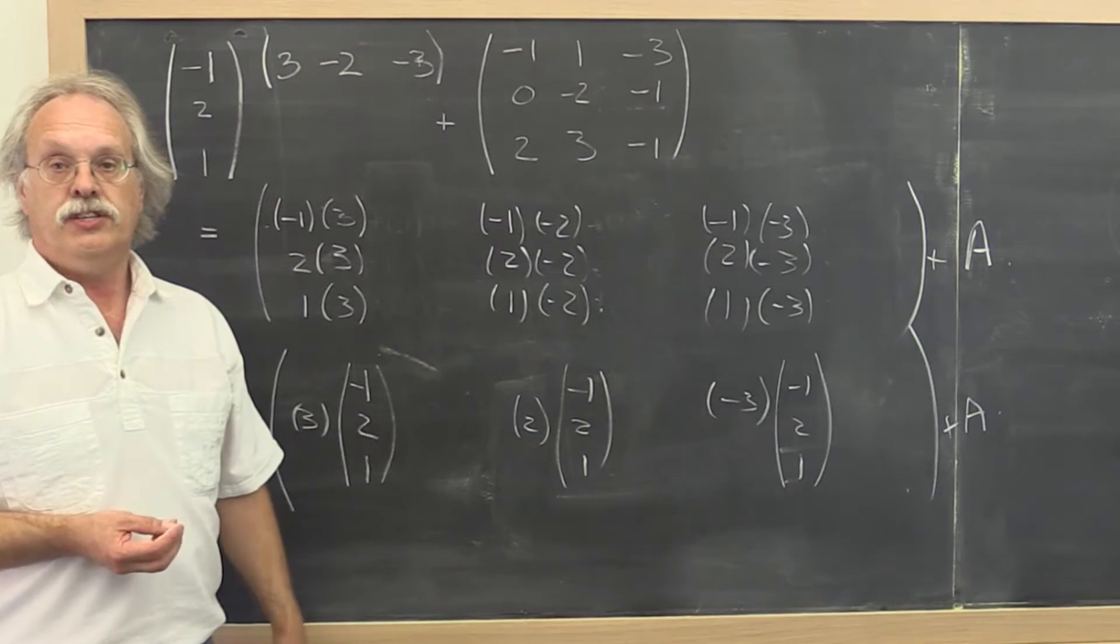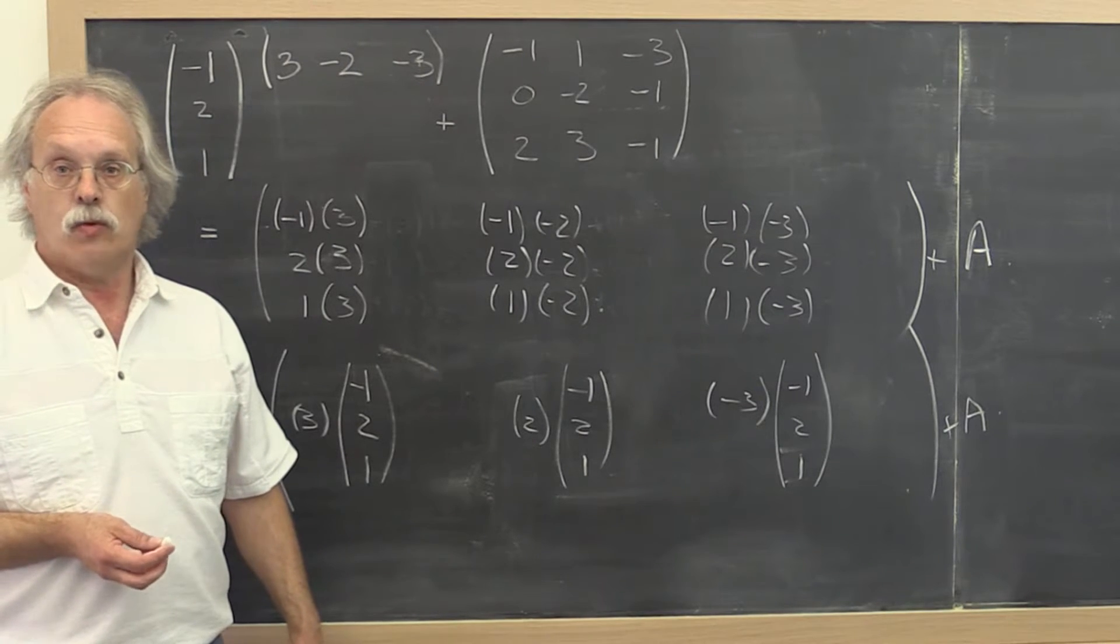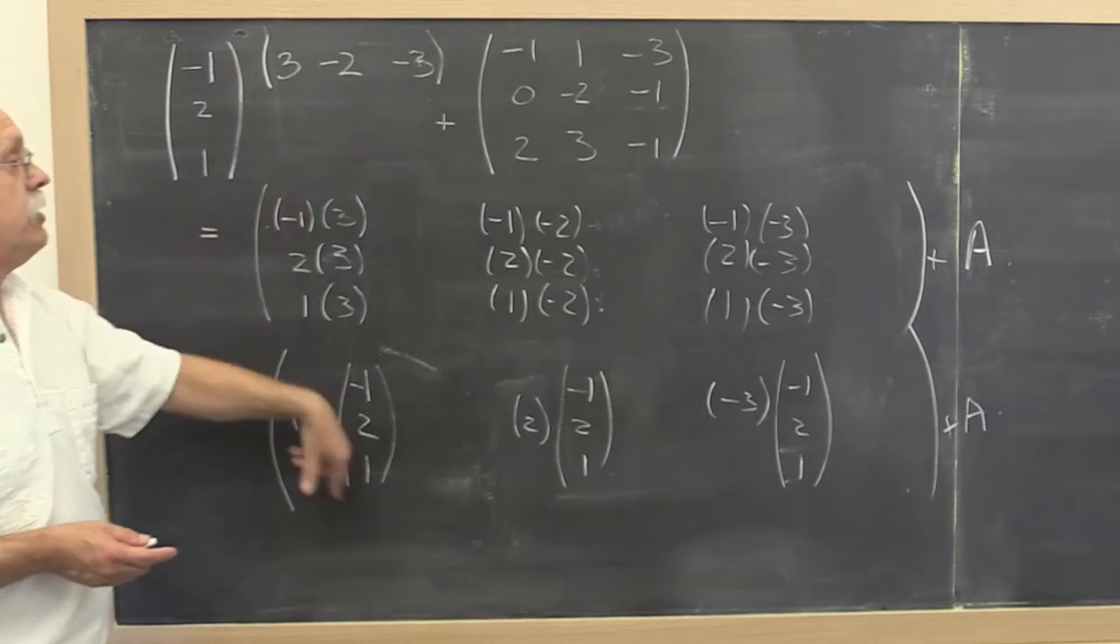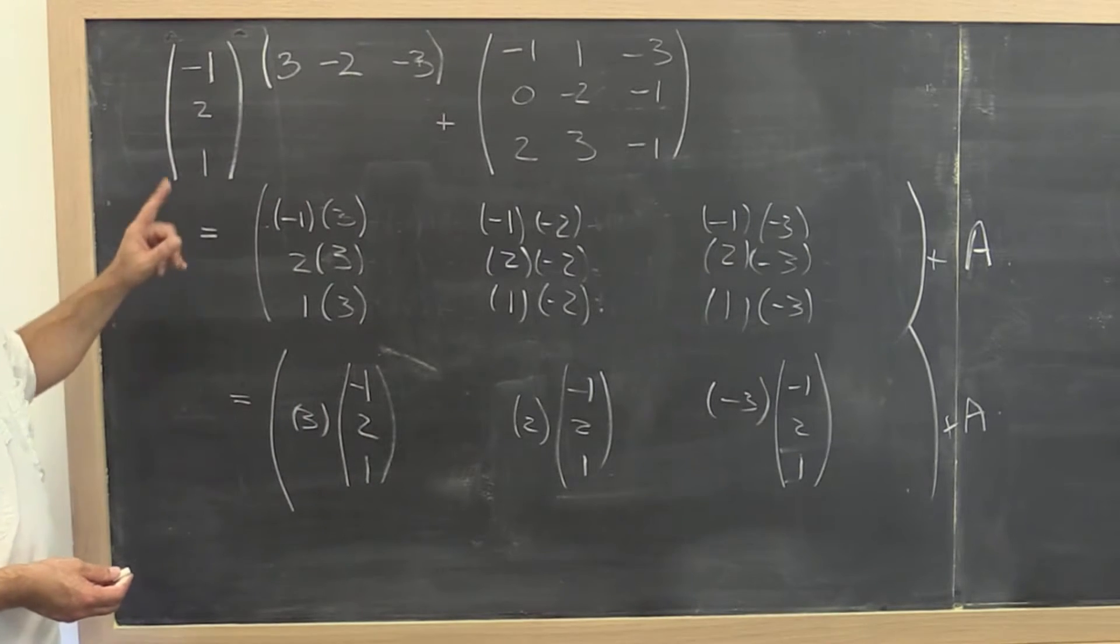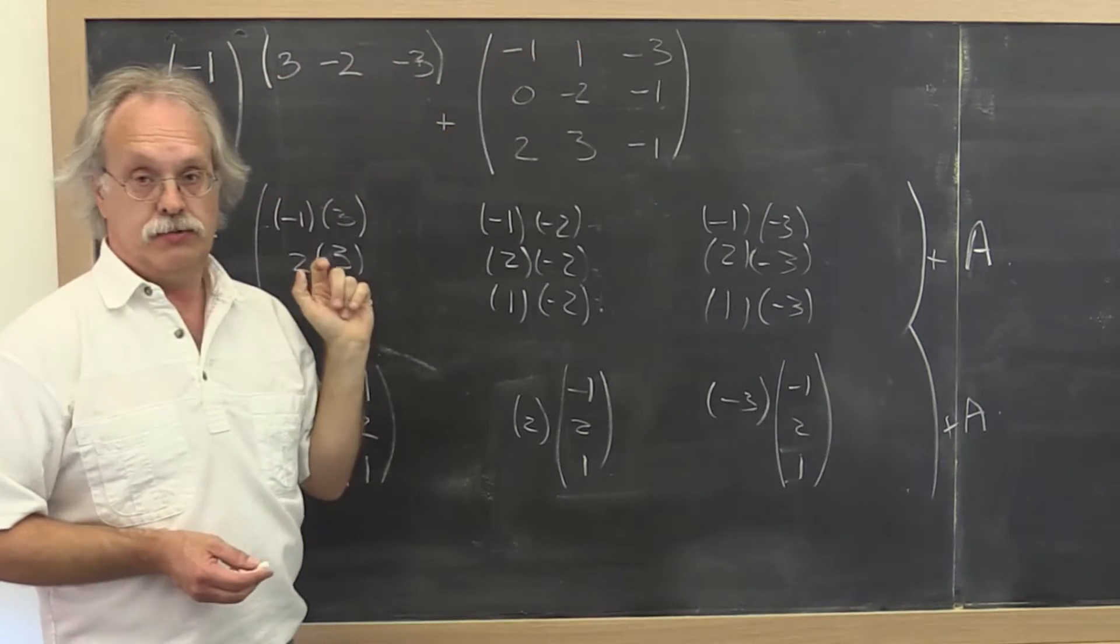So the other really important operation that involves matrices and vectors is known as the rank one update. Now what is that? Well here is a concrete example. It's a vector times a row vector that you add to a matrix.